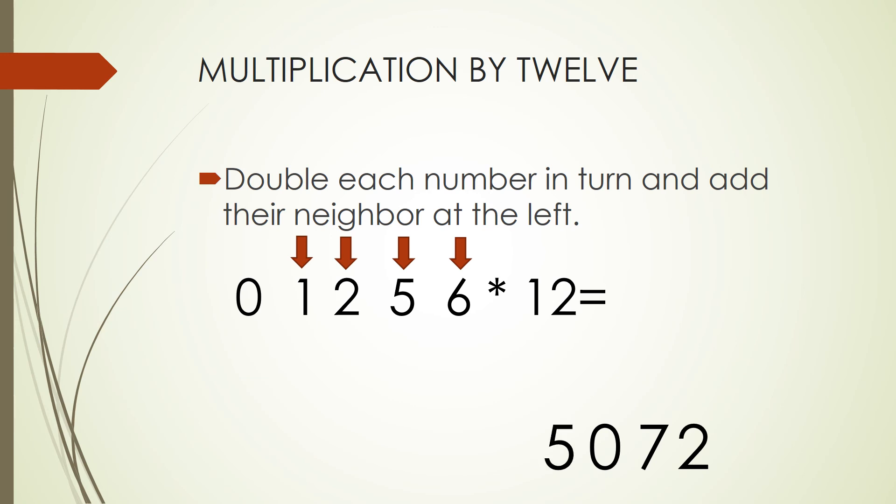We write that 5 and we need to do one more time. In this case we add a 0 for making this operation even easier. We know that the double of 0 is 0 plus their neighbor, that is 1. So we write that 1 and that is the answer that we are looking for.